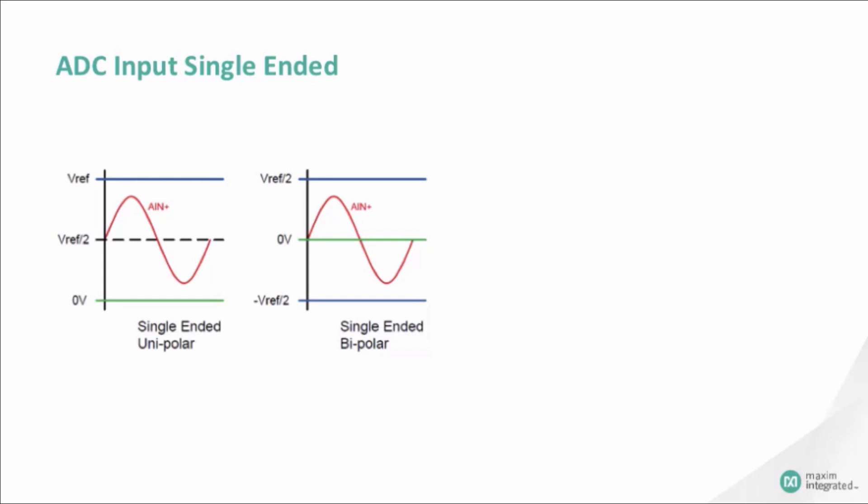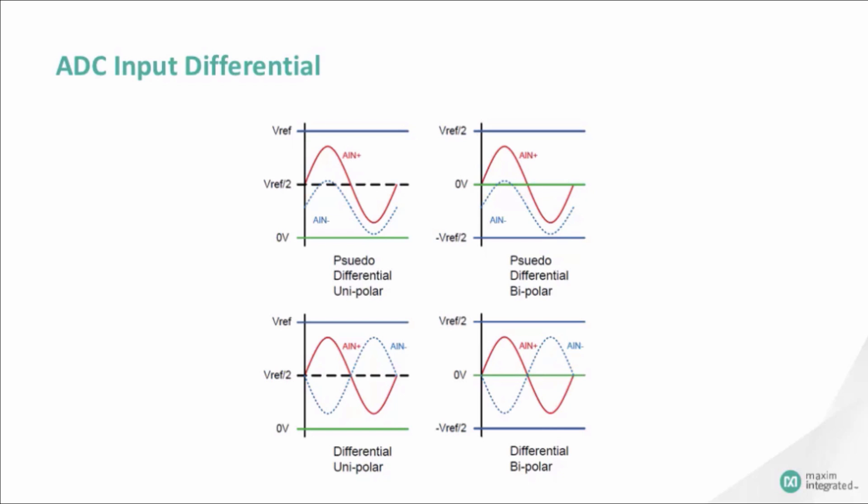An ADC with pseudo-differential inputs digitizes the differential analog input voltage, known as AN-plus and AN-minus, over a limited range. The AN-plus input has the actual analog input signal, while the AN-minus input has a restricted range. A unipolar signal has voltage swings from zero to full-scale, while bipolar signals have voltage swings from below to above ground.